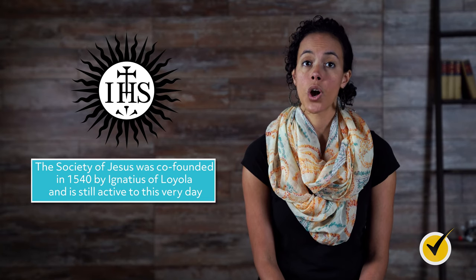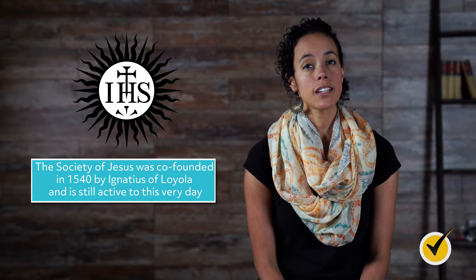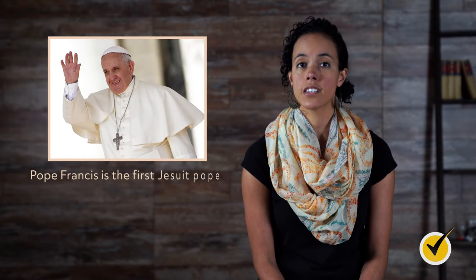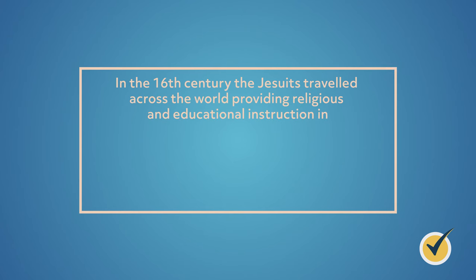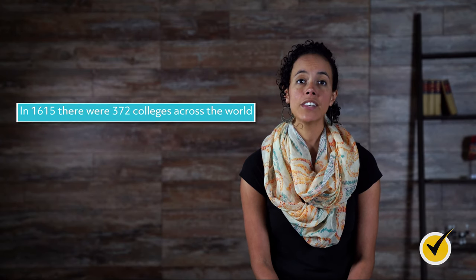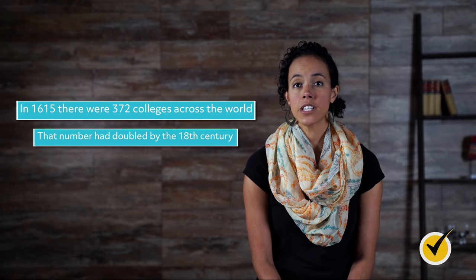As well as strong leadership from above, the Counter-Reformation was driven by other key factors, in particular the efforts of the Jesuits. The Society of Jesus was co-founded in 1540 by Ignatius of Loyola and is still active to this very day. Pope Francis is the first Jesuit Pope. In the 16th century, the Jesuits traveled across the world, providing religious and educational instruction in Africa, Asia, and the Spanish and Portuguese colonies of the New World. In short, the Jesuits helped to globalize the Catholic faith and were hugely influential in shaping education at home and abroad. In 1615, there were 372 colleges across the world, and by the 18th century, that number had doubled. The willingness of Jesuits to endure long and dangerous journeys across the world was an important aspect in the revival of the Catholic Church during the Counter-Reformation.